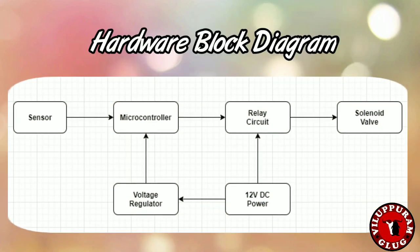This is the hardware block diagram for the system. It consists of a sensor, microcontroller, relay board, solenoid valve, and power circuit. The power circuit is a 12-volt adapter. The 12-volt adapter power is given to the voltage regulator, and the voltage regulator power is given to the microcontroller and sensor boards. The 12 volts is used for the solenoid valve and relay circuit, and 5 volts is used for the microcontroller and relay circuit.